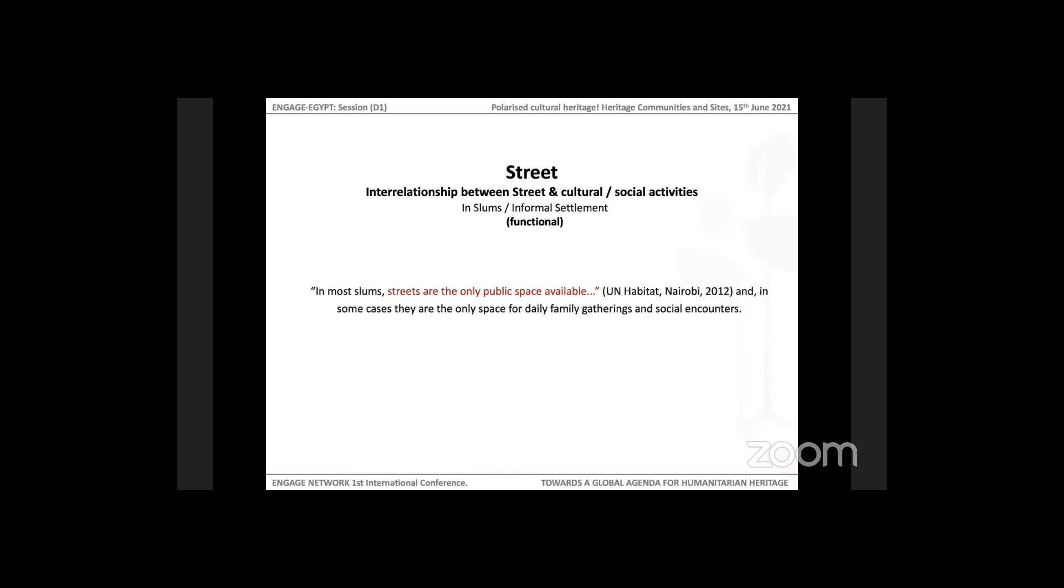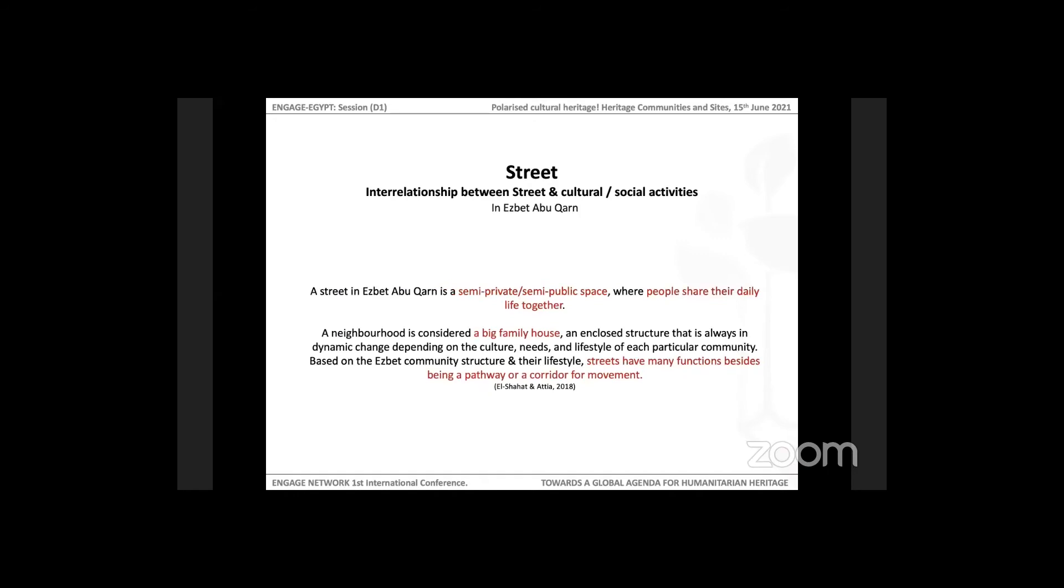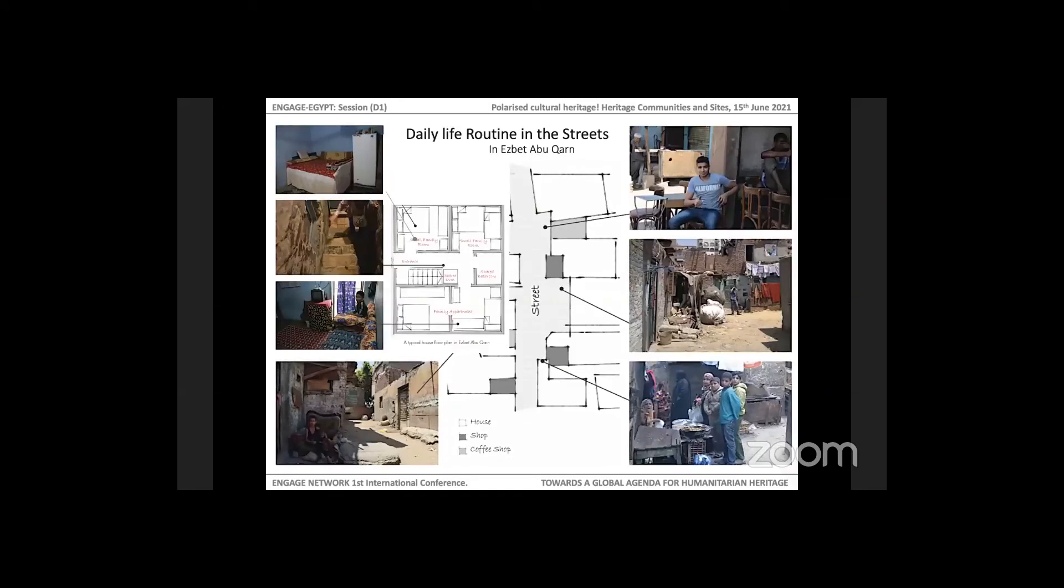Streets in theory are defined as spaces that support unlimited culture, economic, political, and social activities. They are also defined as the social center of cities and towns. In informal settlement contexts they are defined in terms of their function where they are the only public space available there. We as Ezbet project define the street in Ezbet Abu Qarn, as in many other slums in Egypt, as a semi-private, semi-public space where people share their daily life together. A neighborhood is a big family house where streets are recognized as the living room and spaces for people to meet, chat, cook, enjoy their free time, and exchange their problems or goods.